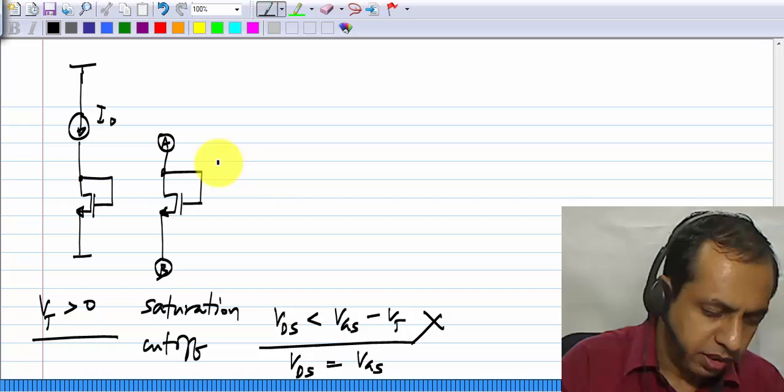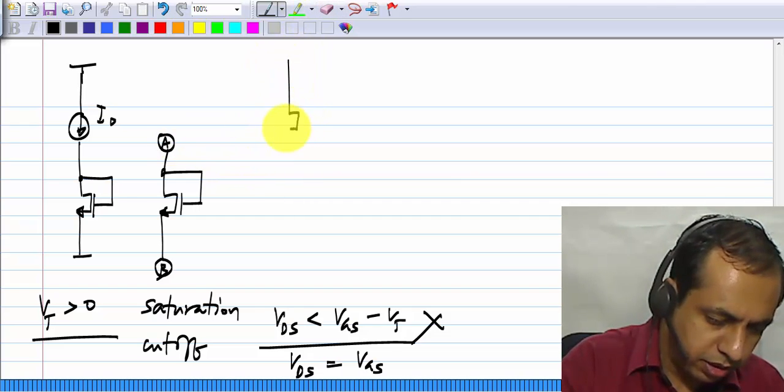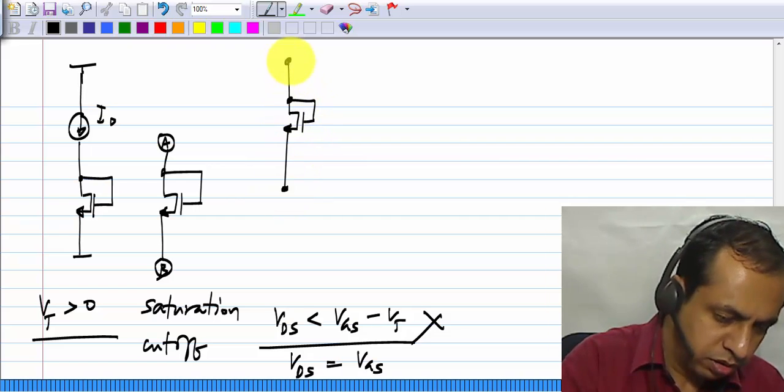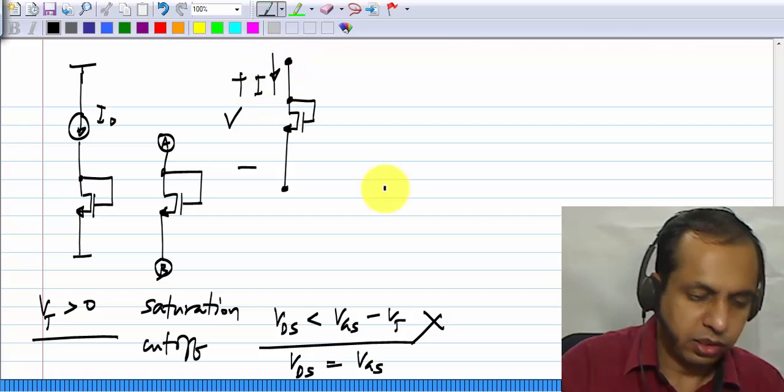Let us just plot the I V characteristic of this element, thinking of it as a two terminal element. We have the voltage V and the current I.